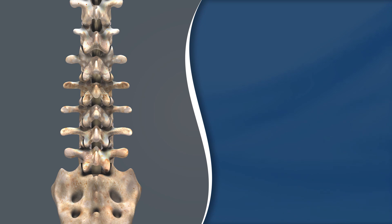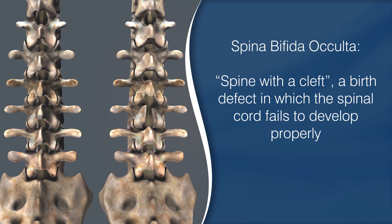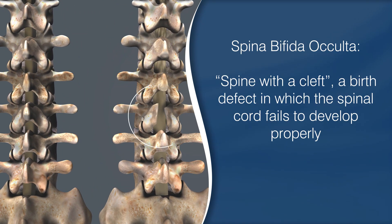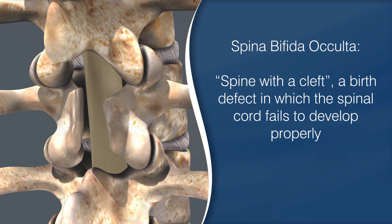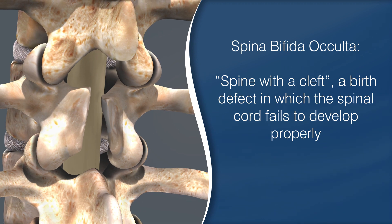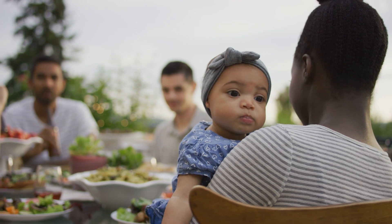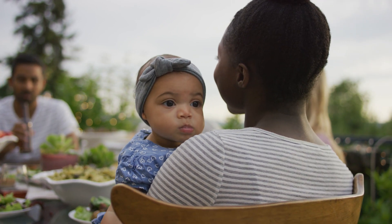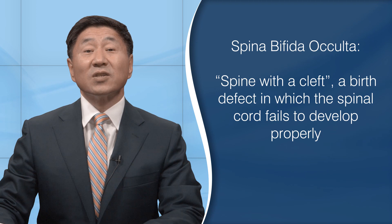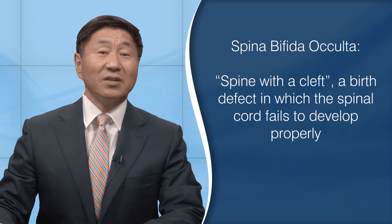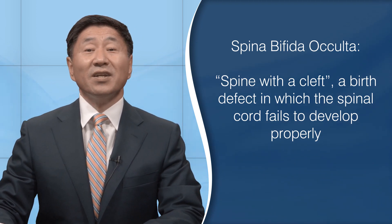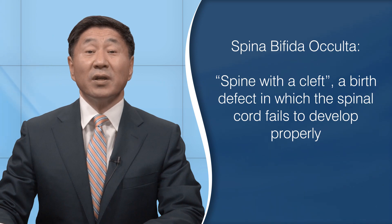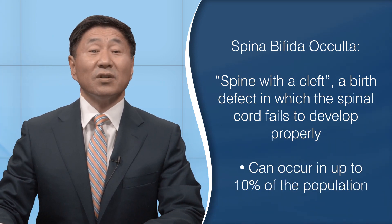Our next variant is the spina bifida occulta. Spina bifida in Latin means spine with a cleft or spine divide. At its most extreme, the spinal canal is open along several vertebrae exposing tissues and nerves. In a more subtle form — the spina bifida occulta — the baby is born with a minor cleft in the spine. This small gap does not cause any disabilities and is considered incidental without consequence, and can occur in up to ten percent of the population.